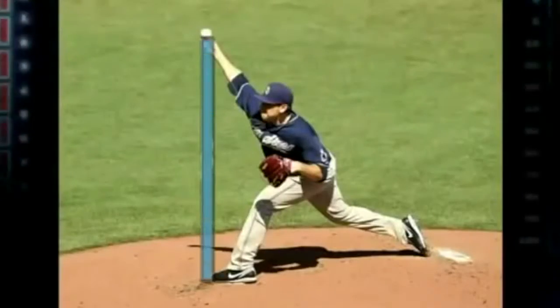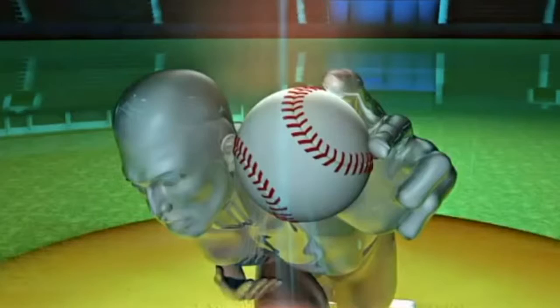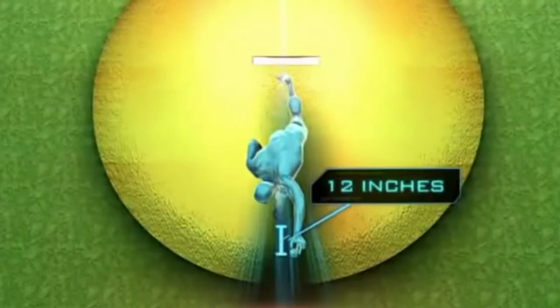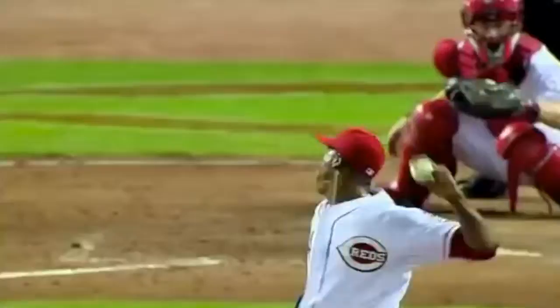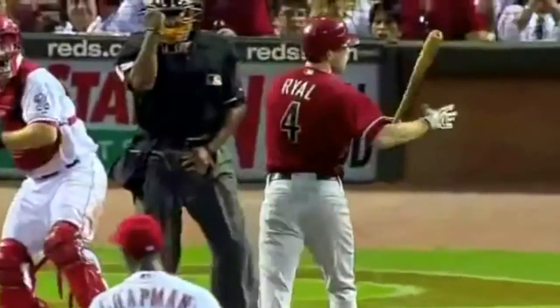Average pitchers release the ball directly over the front foot. Chapman's release point, up to 12 inches in front of his foot, amplifies the difficulty of hitting him. Not only does he throw hard, he throws close.